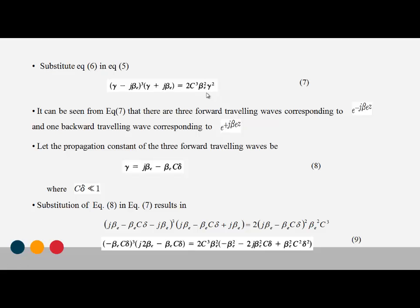From this equation, there are 3 forward travelling waves corresponding to E raised to minus J beta-E, and 1 backward travelling wave corresponding to E raised to J beta-E. The propagation constant for the 3 forward travelling waves is written as gamma equals J beta-E minus beta-E times C times delta, forming equation 8.